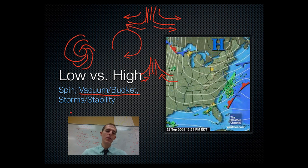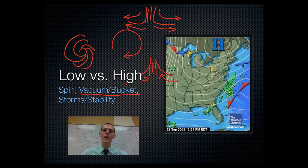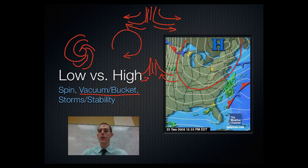As far as storms and stability go, low pressure systems have very unstable air and generate a lot of storms. High pressure systems have stable air and are usually associated with good, nice, clear weather. Looking at our weather map, the area of the country under the high pressure system is probably having fairly clear, decent weather — not many clouds, not many storms, not much going on. It's a nice day.